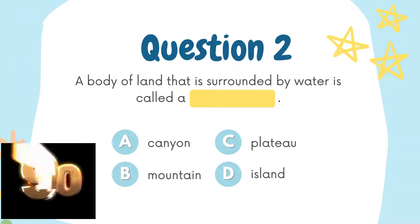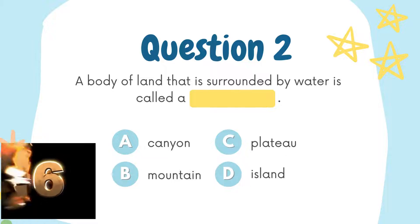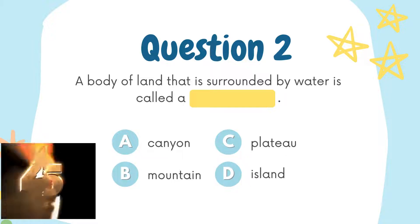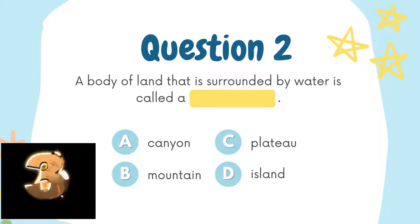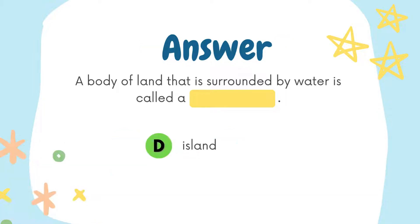Here is your question number 2. A body of land that is surrounded by water is called: Option A: Canyon. Option B: Mountain. Option C: Plateau. Option D: Island. The correct answer is Option D: Island.